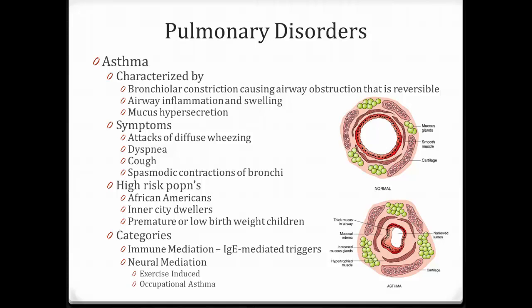There are different kinds of asthma. Immune-mediated asthma is an IgE-triggered hypersensitivity issue associated with a history of hay fever, family history, animal dander, and household dust. IgE stimulates mast cells to release histamine, which then leads to bronchoconstriction.